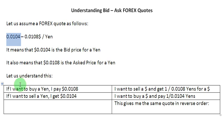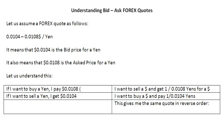Let us look at this scenario in the form of a table to understand it better. If I want to buy a yen, I am going to pay 0.0108 dollars for it. So this number represents the asked price for a yen.